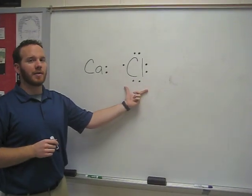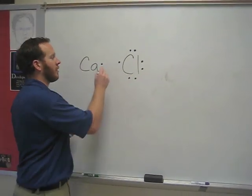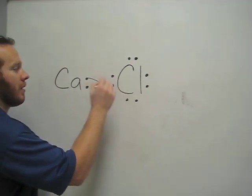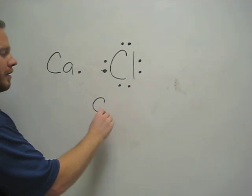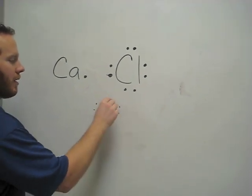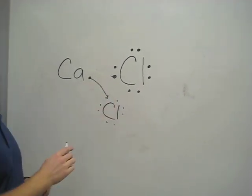Chlorine has seven valence electrons so it can only take one. Calcium is still not happy so it has to find another chlorine to give its electron to.